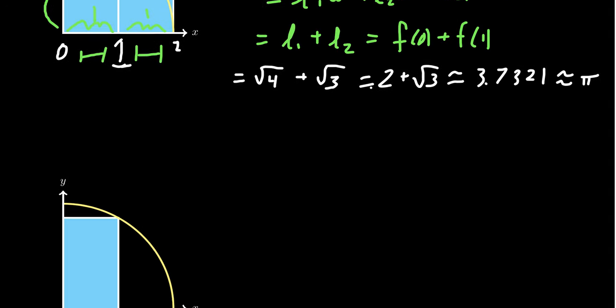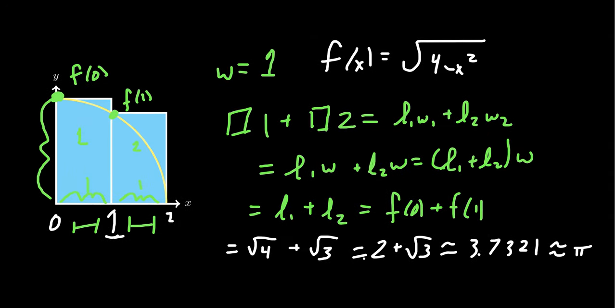Before leaving this example, notice that this is an overestimate, because our rectangles were sticking above the curve. We're getting extra area we don't want. This happened because we chose the left side of each interval to determine the rectangle's height. What if we try the right endpoint instead?